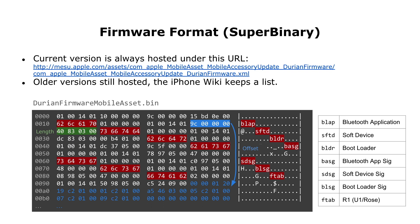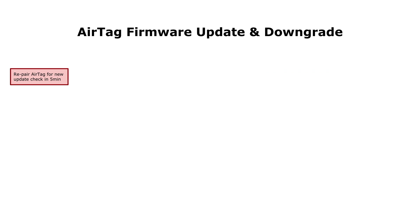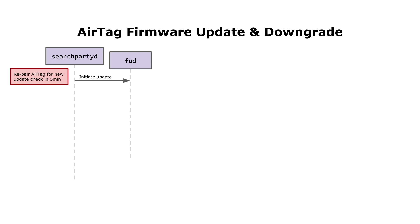The firmware update requires hooking four different locations and running a shell script in parallel. The first step is to re-pair an AirTag — every time you pair one, after five minutes there is an update check. I haven't found how to manually trigger it yet since it's written in Swift and asynchronous. Just re-pairing is the easiest trigger. Every roughly 9,000 seconds it's also checked again. The SearchParty daemon recognizes the newly paired AirTag and initiates an update with the firmware update daemon.